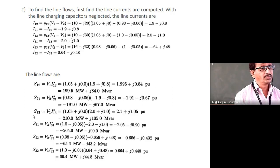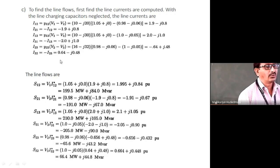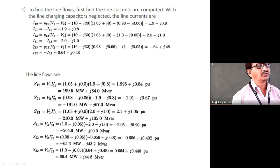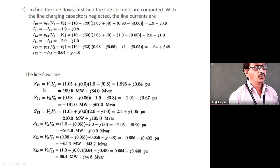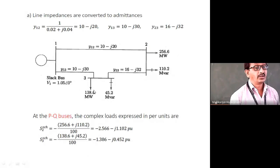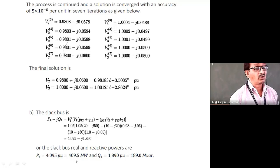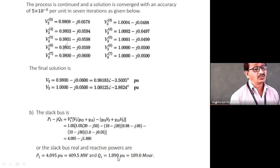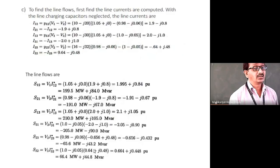The Qmin and Qmax limits for the generator are not given in this problem, so we assume whatever Q value is computed can be used without limit checking. If Q limits were given, the flowchart check — is Qi within [Qmin, Qmax]? — must be applied. Bus 2 has 400 MW and 250 MVAR load, giving P2 = −4 pu and Q2 = +2.5 pu in per unit (PG − PD = 0 − 4 = −4; QG − QD = 0 − 2.5 = −2.5, sign reversal gives +2.5 in the expression).